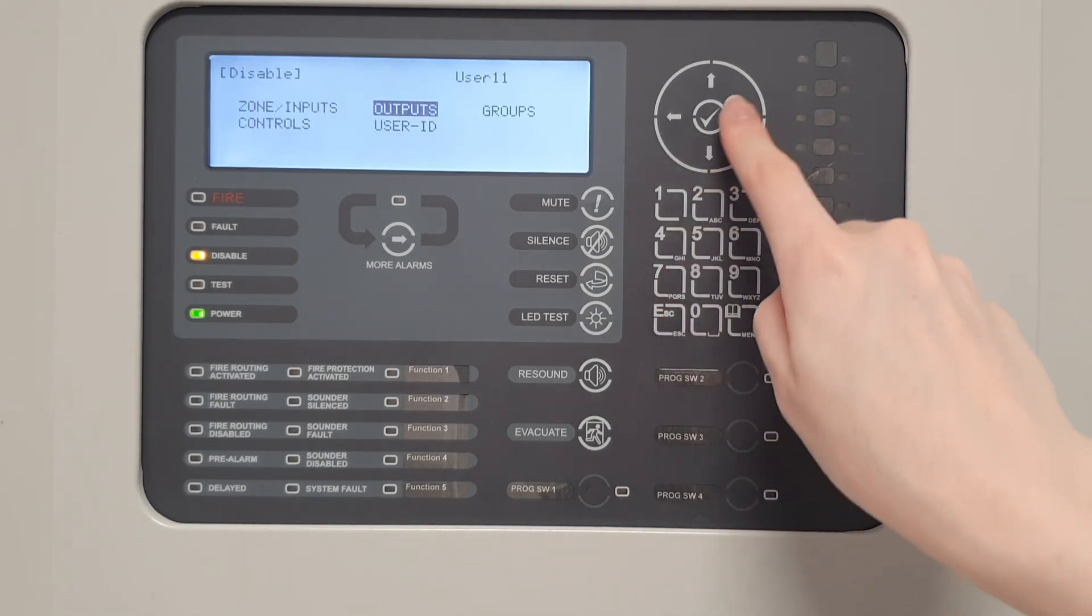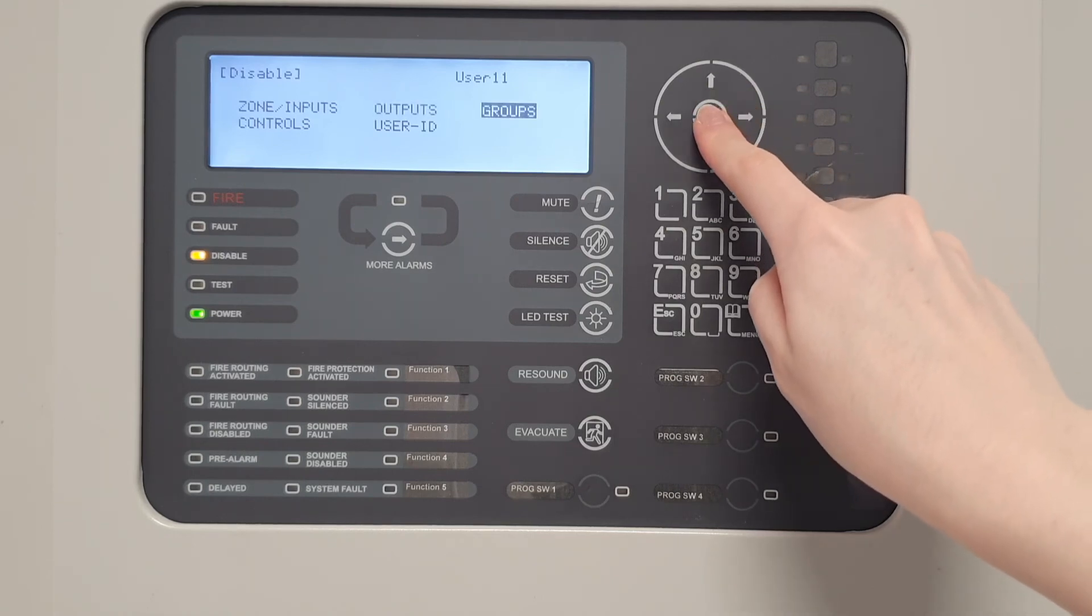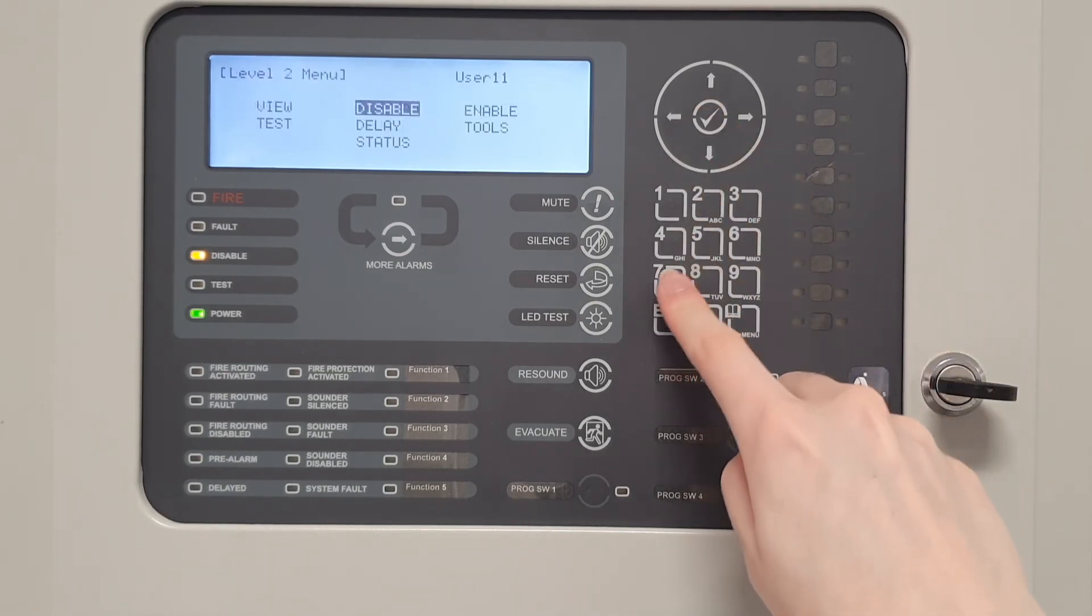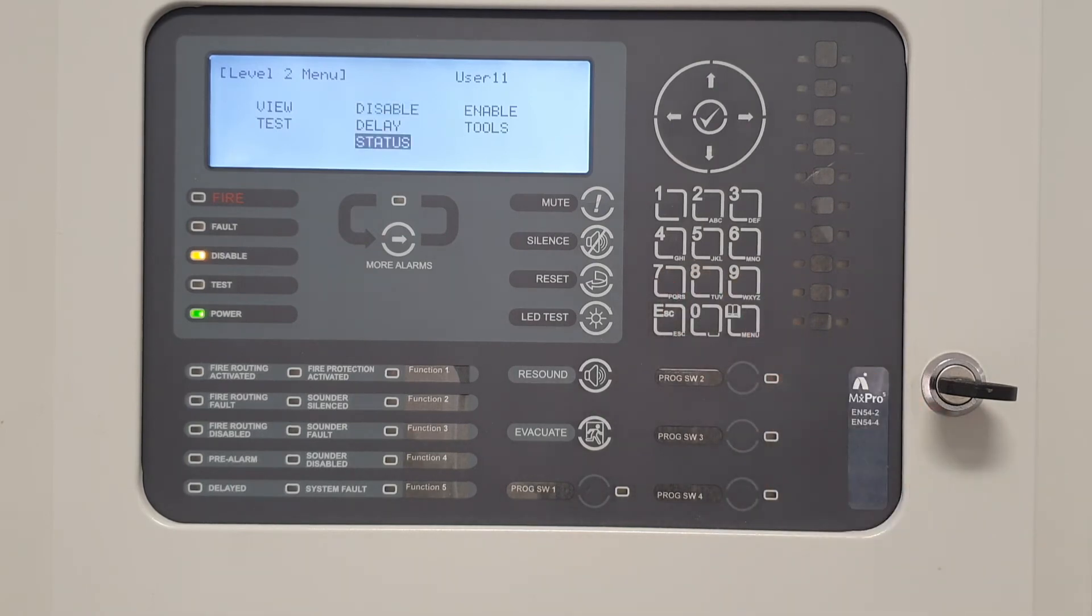Selecting groups from the disable menu will show a list of pre-programmed disablement groups. Scroll down to the desired group, then press tick to disable. Pressing escape a few times will take the panel back to the main menu where it will timeout to show the panel operation.